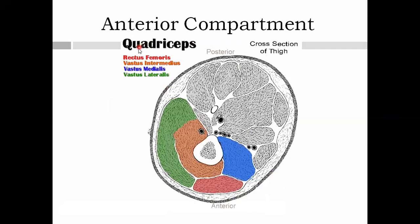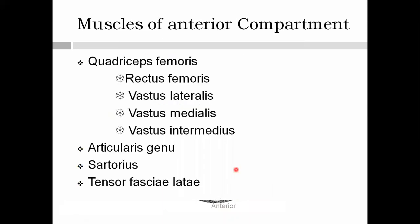The anterior compartment consists of a major group called the quadriceps femoris, which is not a single muscle but a group of four muscles: rectus femoris, vastus lateralis, vastus intermedius, and vastus medialis. All four tendons condense together to form the ligamentum patellae. Other muscles in this compartment include articularis genus — said to be a detached part of the vastus intermedius — the sartorius, which is the longest muscle in the body, and the tensor fasciae latae.